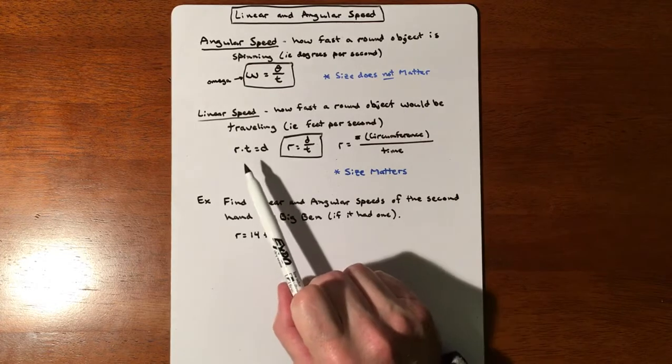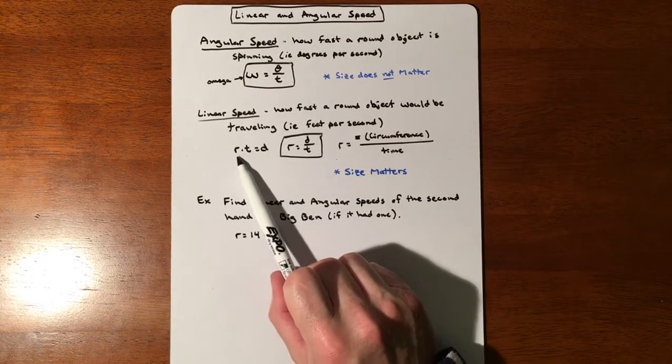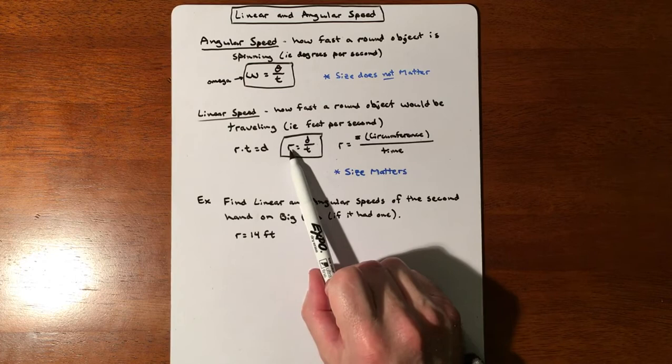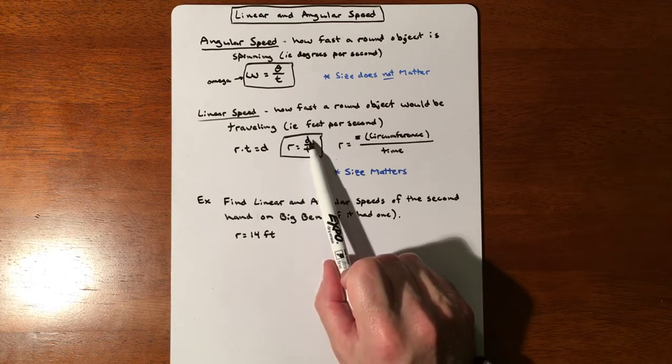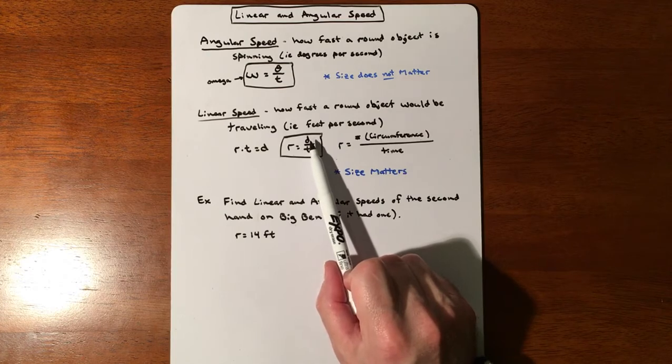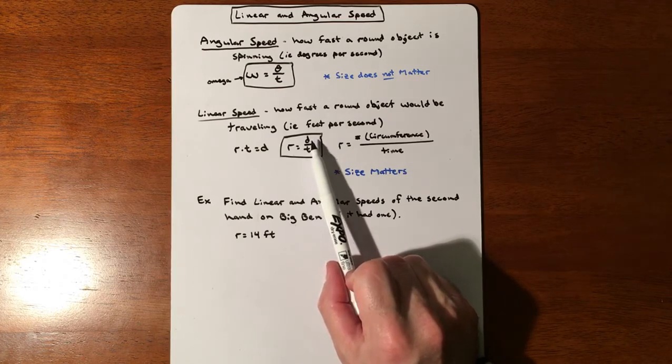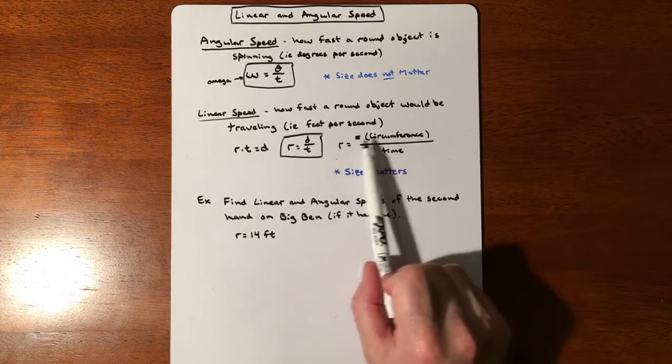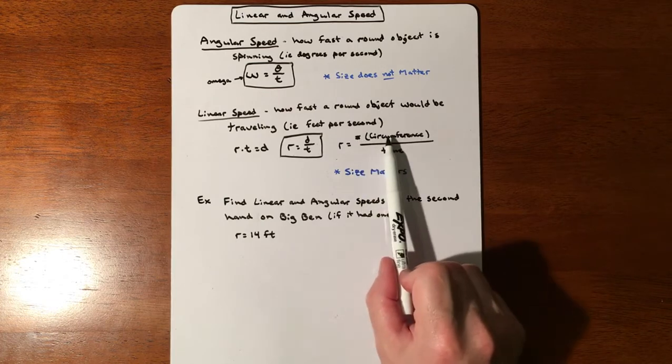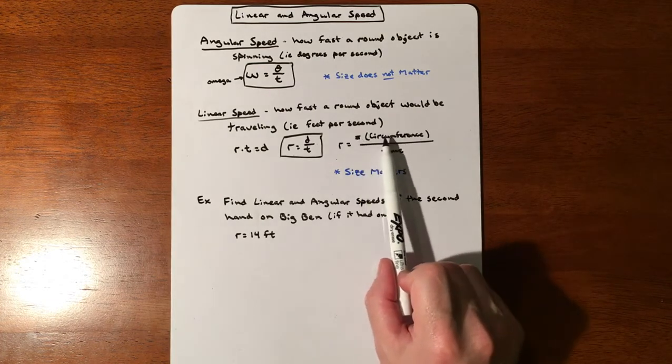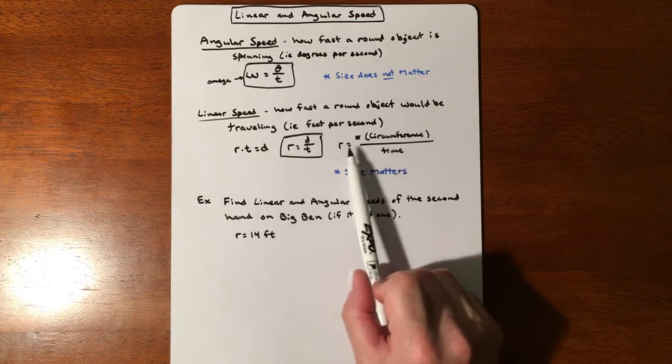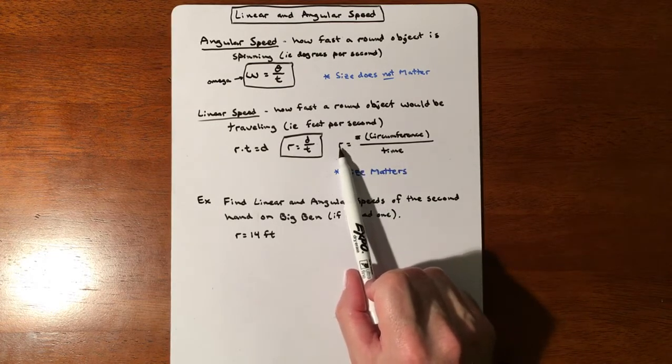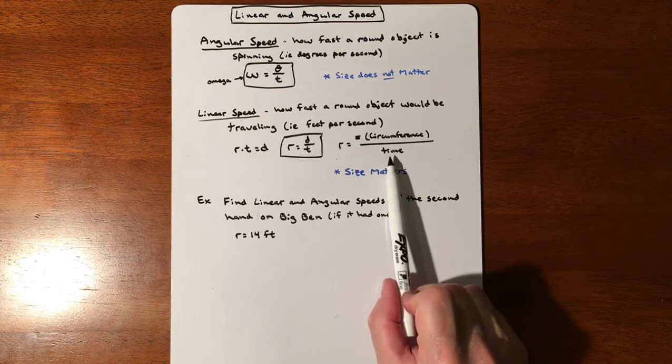Angular speed does play a role with linear speed, but I treat linear speed as something I'm familiar with: rate times time equals distance. If I isolate rate, it's distance divided by time. This distance we're talking about is a circle rolling down the road, so it's circumferences - the number of circumferences. It could be half a circumference or 20 circumferences in a certain amount of time.